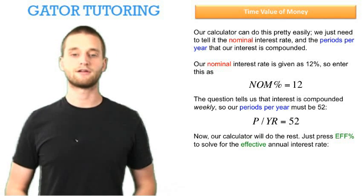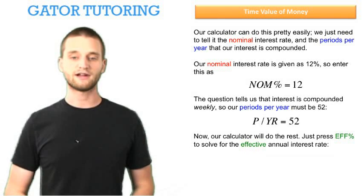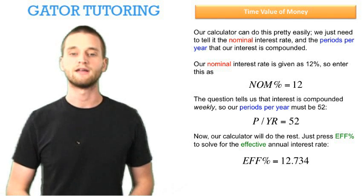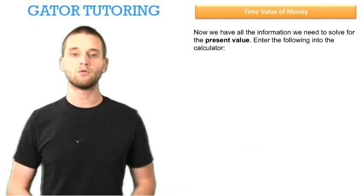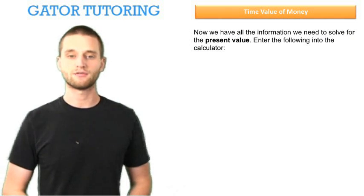Now, our calculator will do the rest. Just press effective percentage to solve for the effective annual interest rate, and we get 12.734%. Now, we have all the information we need to solve for the present value.